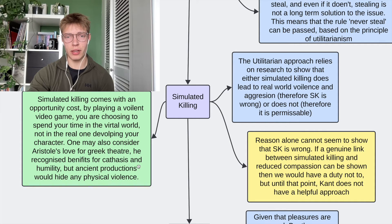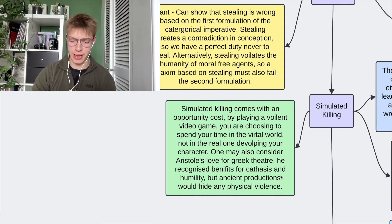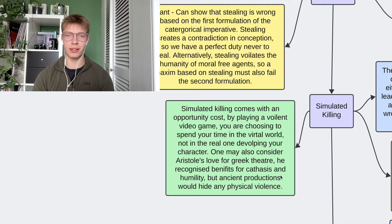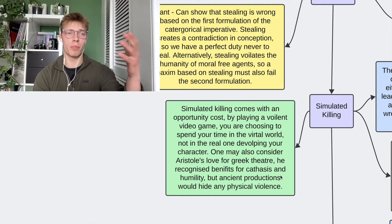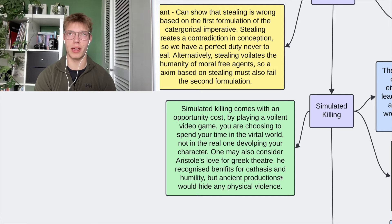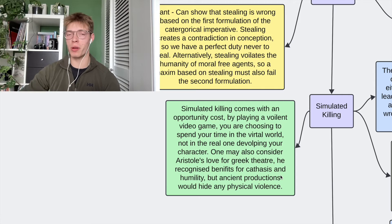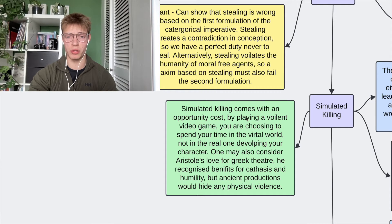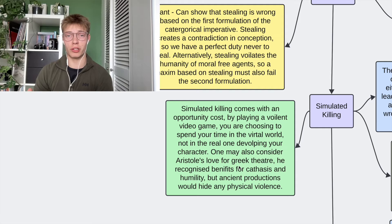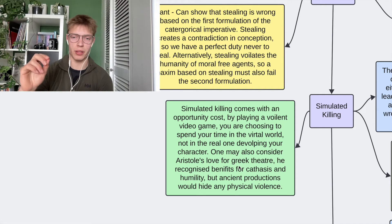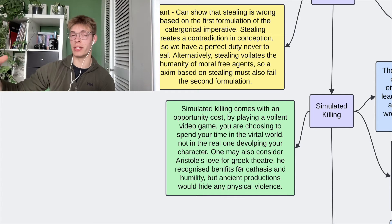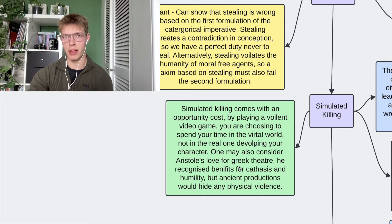For Aristotle, the approach is quite strong and effective. He can show that there's an opportunity cost: if I spend all day gaming — playing Call of Duty or GTA — that comes at the cost of performing things in the real world that improve my character. It's not that simulated killing is wrong in and of itself; it's just that it's not improving the agent or helping me reach eudaimonia. So I should avoid it because I need to develop other virtues. There is some nuance: Aristotle did like Greek theatre, which one could consider a type of simulated killing, but there was no actual violence on stage — it would all be reported by characters rather than shown — so that counter doesn't work.